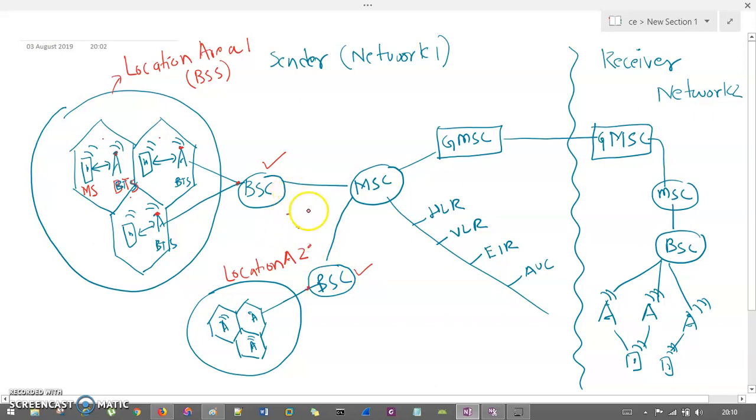So, this MSC is going to be only one inside the city. So, this is the biggest office. So, this is my one MSC, which handles a different number of BSCs. And then, at the network one, we have something called as gateway, gateway mobile switching center. This is my gateway mobile switching center.